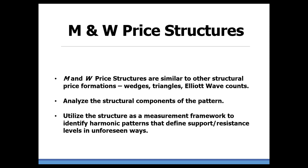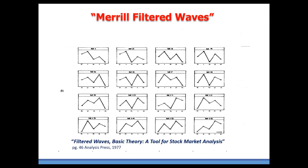I would really attribute one of the prominent forefathers of all of this to a gentleman named Arthur Merrill. In his book 'Filtered Waves' back in 1977, he released a categorization of nearly 40 different types of M&W zigzag formations. Some of these are similar to harmonic patterns, but did not attribute any specific ratio measurements or the other pattern components that we know are within harmonic patterns.